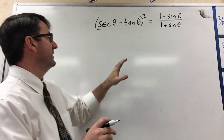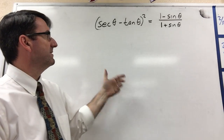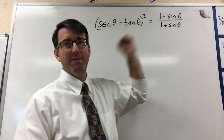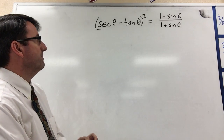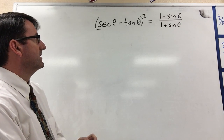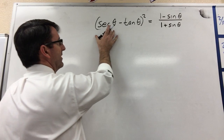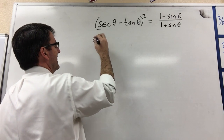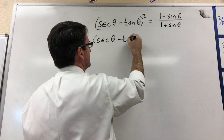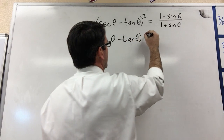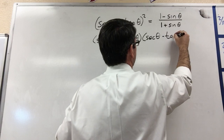Alright, so what we're going to do here is just look at the left side of this. We're going to try to simplify that down and see if we can make it look like the right side of the equation. So the first thing I want to do is rewrite this as secant theta minus tangent theta times secant theta minus tangent theta.